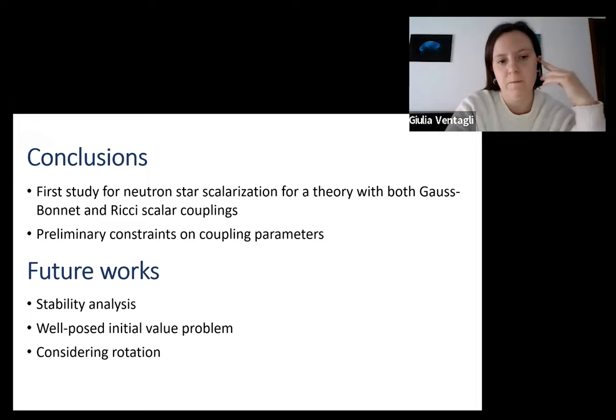Of course, there are still many things to do. We could do a stability analysis of neutron stars. Yorgos this afternoon will talk about black hole stability for the same theory. One could also study well-posed initial value problems of such theory, which has not been done so far, and we can complicate further our space-time assumptions by adding rotation to our system. There is still much to do, but this is what we have done so far. Thank you.